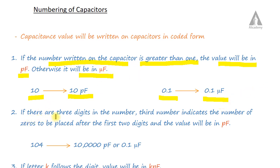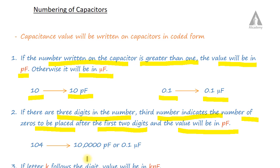Now the second type. If there are three digits, then the third number indicates the number of zeros to be placed after the first two digits, and the value will be in picofarad. For example, 104: the first two digits are 1 and 0, and the third digit 4 means place four zeros, giving 100000 picofarad.